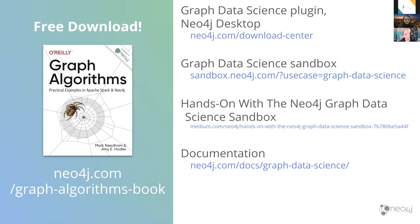If you find this interesting and want to learn more on your own, my colleague Amy and I wrote a book called Graph Algorithms — you can get a free PDF at neo4j.com/graph-algorithms-book. I've also put links here for the data science sandbox, Neo4j Desktop, the documentation, and a blog post from one of my colleagues showing how to use it. If you have any questions, drop them in the chat or unmute yourself — we have about 10 minutes for Q&A.